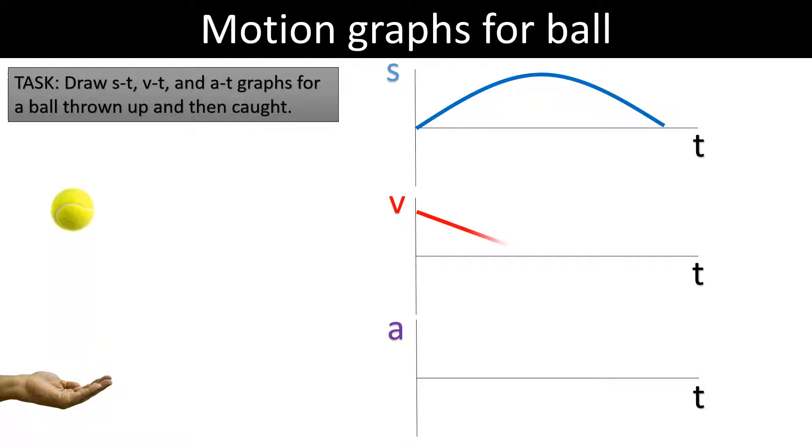The one that a lot of people find tricky is the velocity-time graph because while it's going up, the velocity is positive, when it's going down the velocity is negative, and the minute it leaves the hand the velocity is decreasing, it's slowing down until it reaches a velocity of zero at the top of its arc.